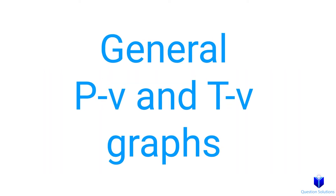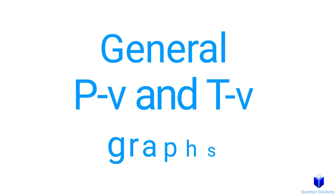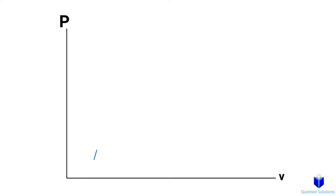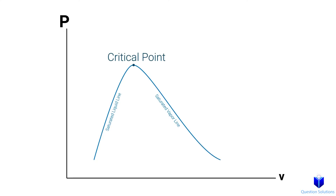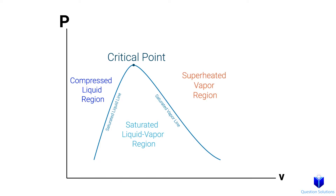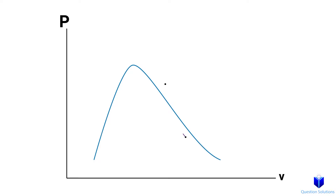Sometimes we might have to show a change in pressure and specific volume with respect to saturation lines on a graph. When it comes to pure substances, the general pressure versus specific volume graph looks like this. This is the critical point. The left side is the compressed liquid region, the middle being the saturated liquid-vapor region, and this area being the superheated vapor region. So if a question asks you to draw a change of pressure and specific volume, you first need to draw a rough version of this graph and then plot out the pressure points afterwards. Don't worry, we will cover this in the first example.